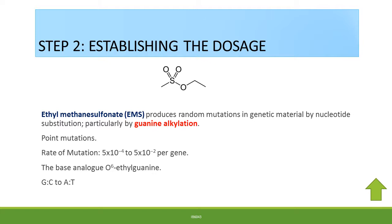The second aspect is to establish the dosage of the mutagen. Ethylmethanesulfonate produces random mutations in genetic material by nucleotide substitution, particularly in guanine alkylation. This results in point mutations and the rate of mutation is 5×10⁻⁴ to 5×10⁻² per gene. The application of ethylmethanesulfonate results in the formation of a base analog O6-ethylguanine, which results in GC to AT transitions.